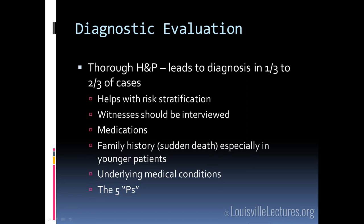Family history is very important. We know arrhythmic events can run in families — prolonged QT syndrome, that sort of thing. Structural heart disease associated with sudden death, like Marfan syndrome, should also be asked about, particularly regarding cardiac deaths and sudden death specifically. Our patient had a brother die of MI at age 44, which is rather young. You always want to know about underlying medical problems, because conditions like Crohn's disease with a recent flare and bloody stools may mean profoundly anemic patients whose syncope has an explained cause.